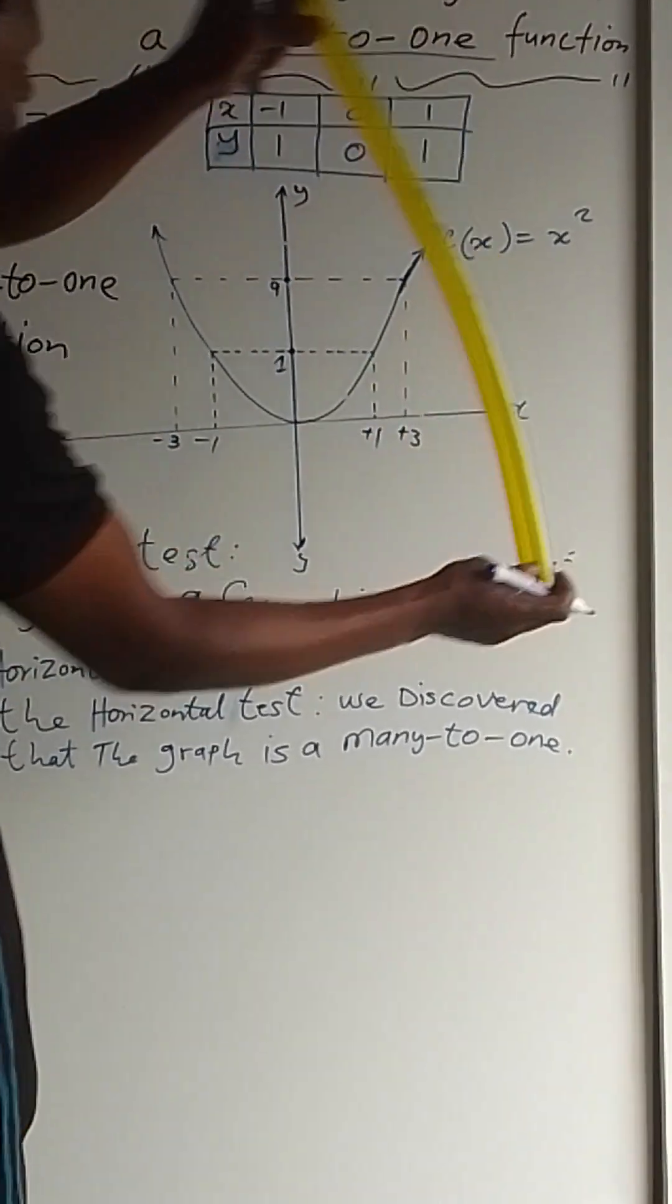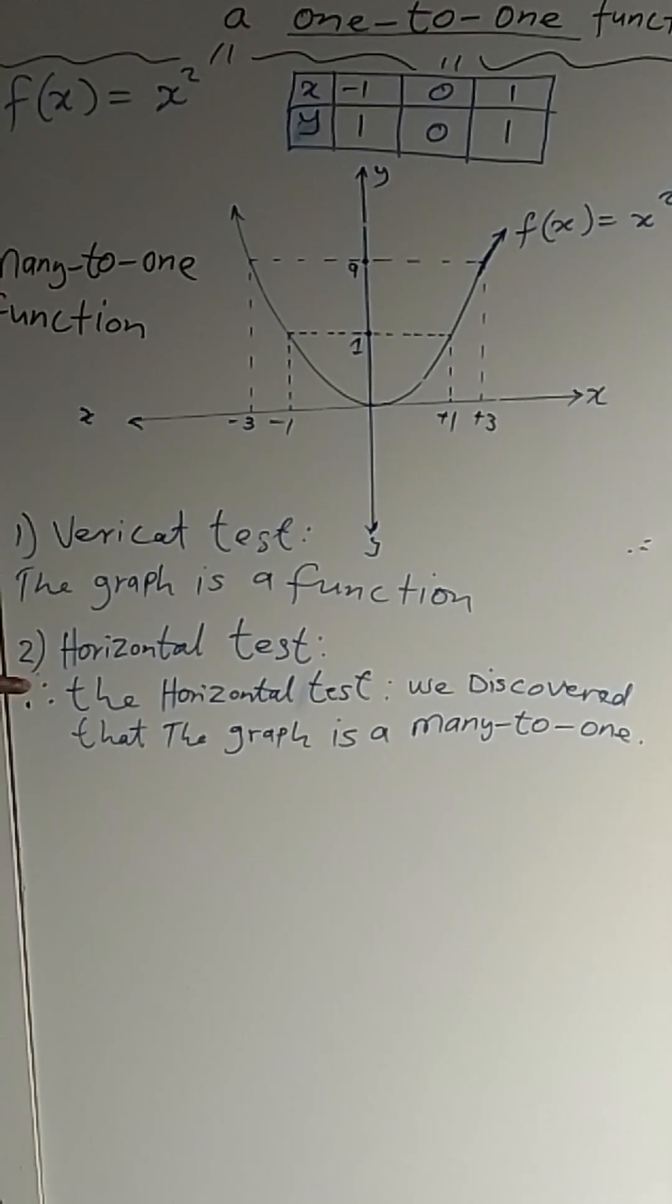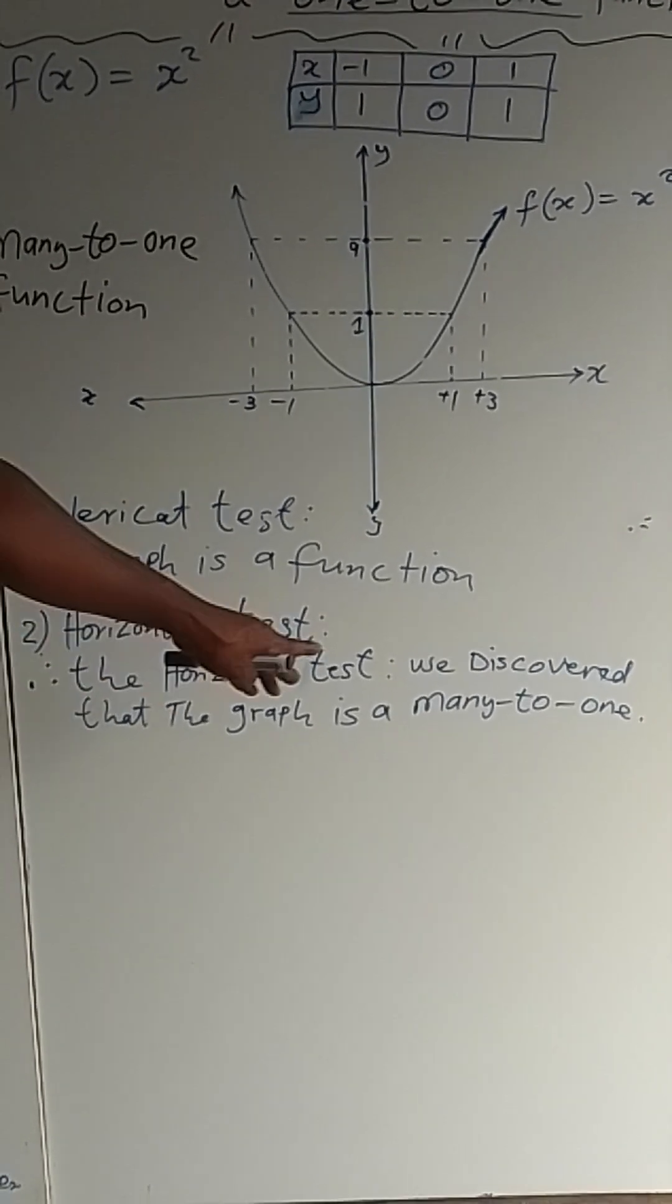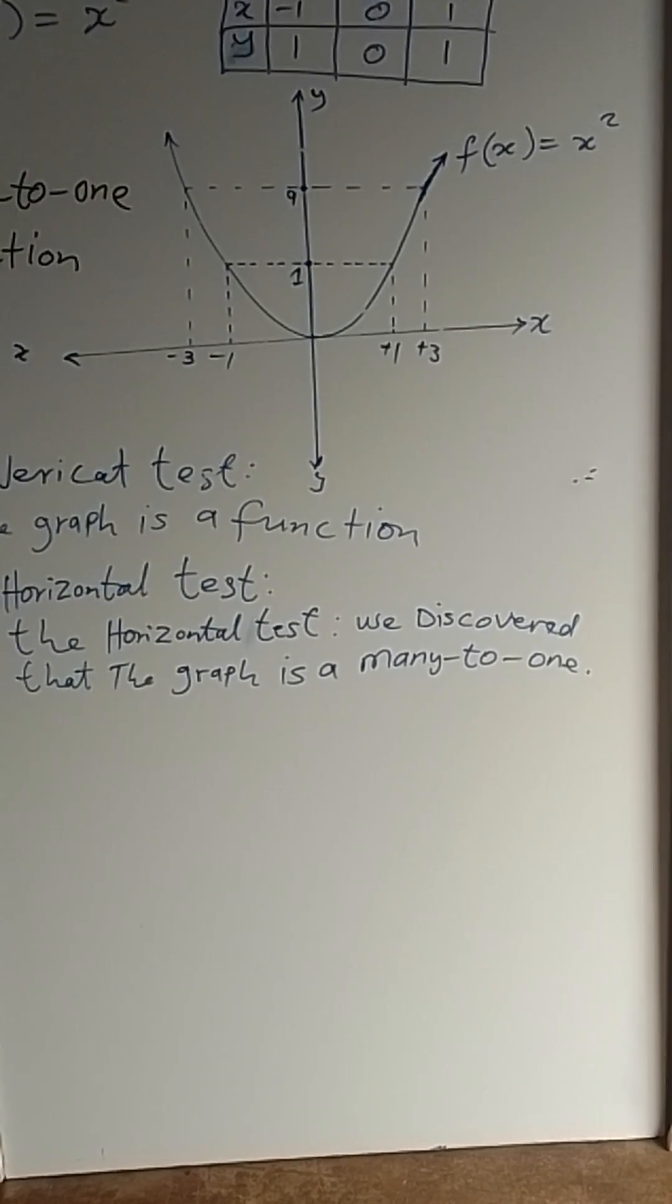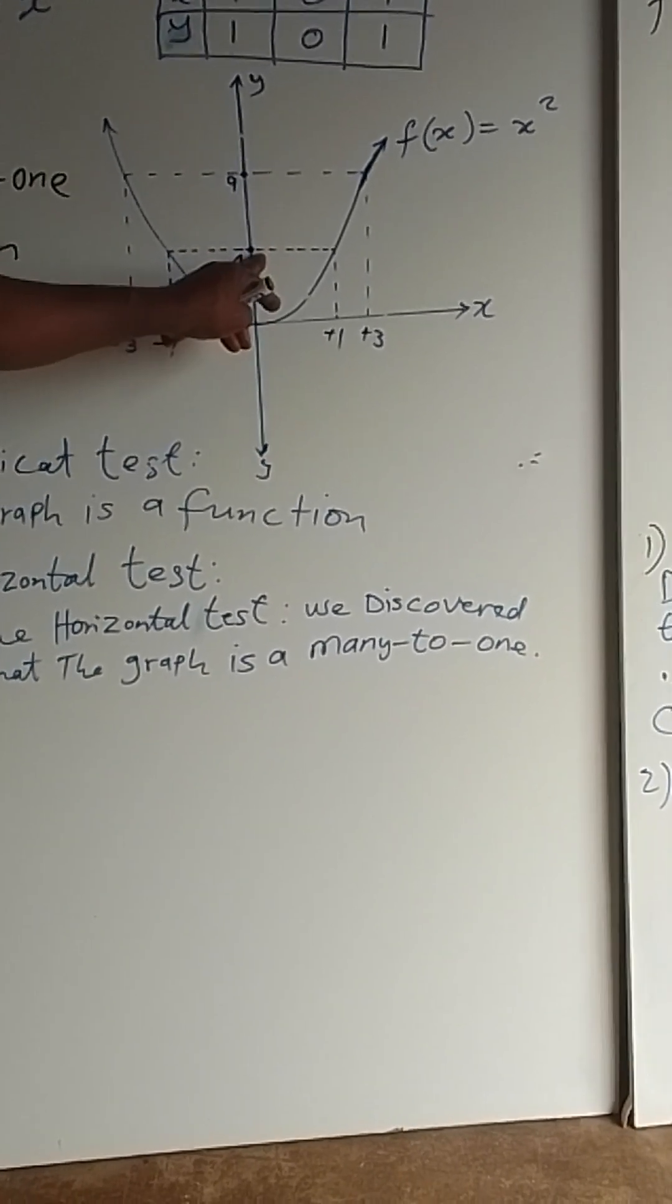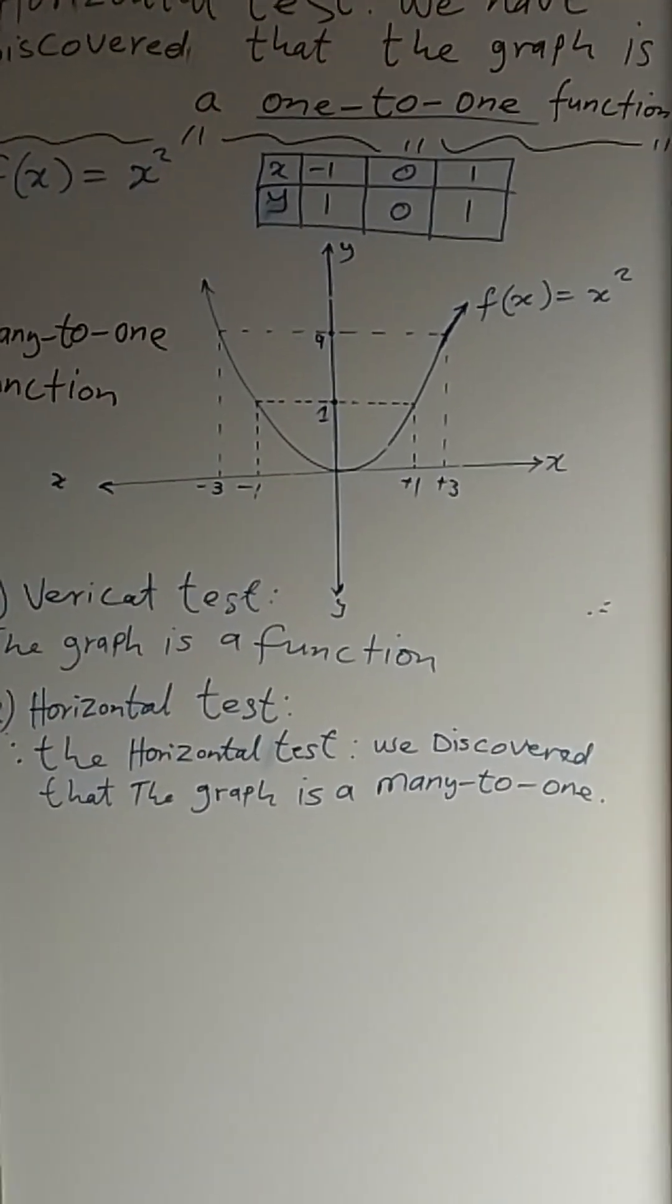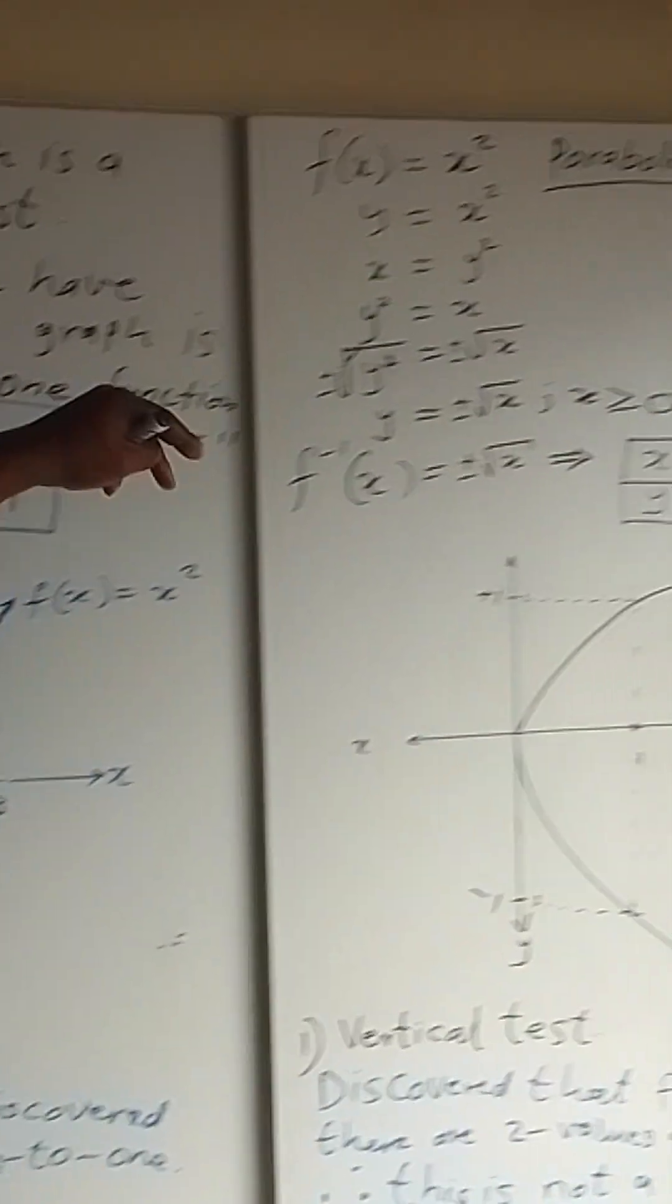Then we go for a horizontal test. Therefore, the horizontal test we discovered that the graph is many-to-one. As you can see, there are many values of x that map only one value of y.